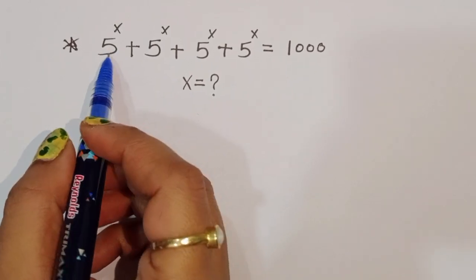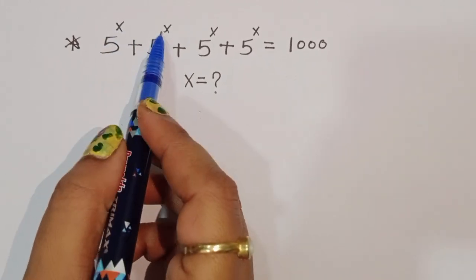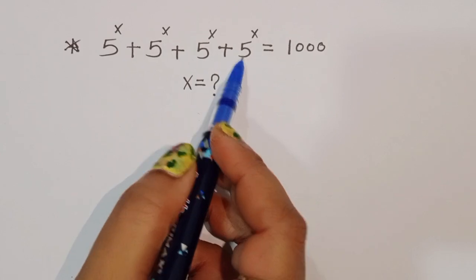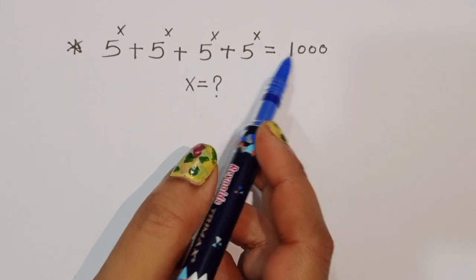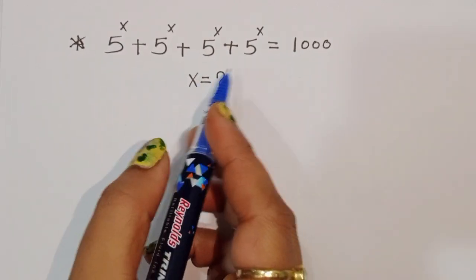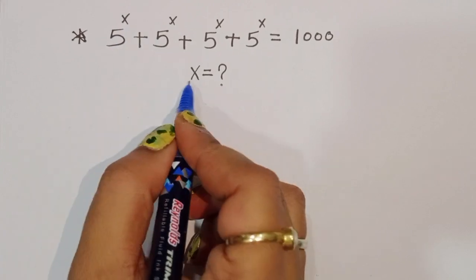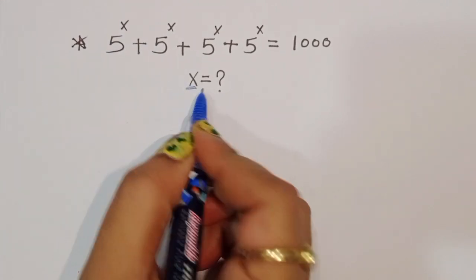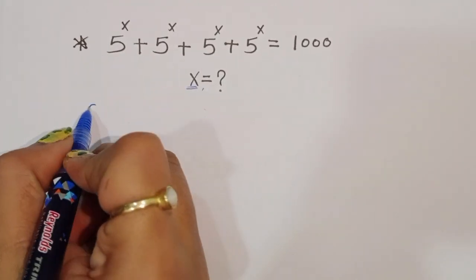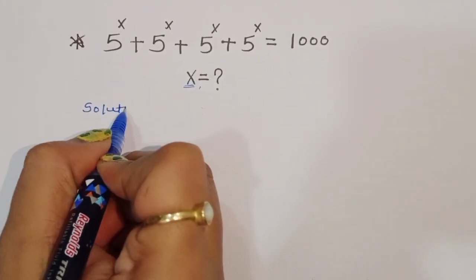The question is: given 5 power x plus 5 power x plus 5 power x plus 5 power x is equal to 1000. We have to find out the value of x here. Now let's see how we can find out this solution.